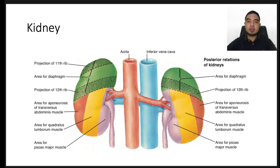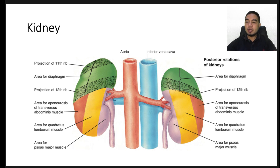For example, the kidneys move inferiorly approximately 3 centimeters — one vertebral body — during inspiration and during changing body position from supine to the erect position. Each kidney measures 10 to 12 centimeters in length, 5 to 7.5 centimeters in width, and 2.5 to 3 centimeters in thickness.